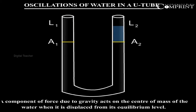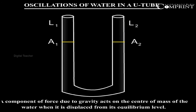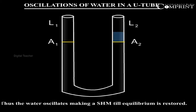A component of force due to gravity acts on the center of mass of the water when it is displaced from its equilibrium level. Thus the water oscillates, making a simple harmonic motion (SHM) until equilibrium is restored.